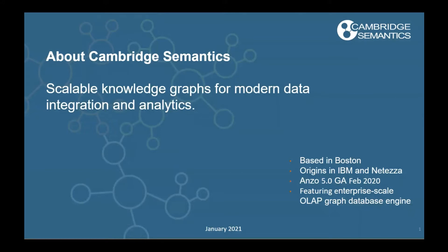About four or five years ago, they acquired a group with origins in Natiza that had been working on building a very scalable graph database. When they merged these products together, they released a couple different versions of the platform. Most recently, Anzo 5.0 was released in 2020, and it features a very scalable enterprise OLAP graph database engine to build enterprise-level knowledge graphs.